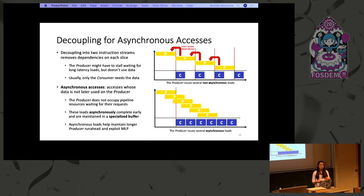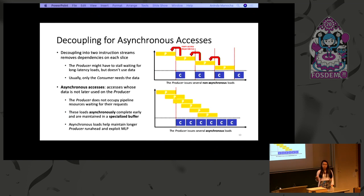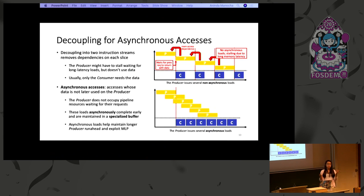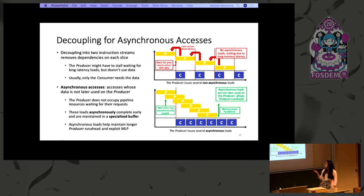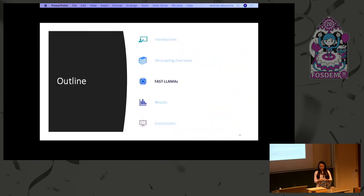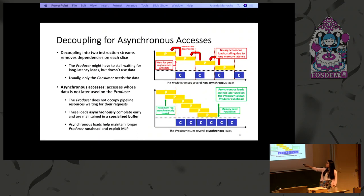As a result, the producer doesn't have to occupy its hardware structures or pipeline resources. The top execution timeline shows the scenario with no asynchronous memory accesses — each memory access depends on the previous one, leading to frequent stalling on both producer and consumer. Whereas with asynchronous memory accesses, the producer can issue a request and move on to the next one without waiting for the previous one to finish. Following the warm-up period, the consumer never has to stall as a result.